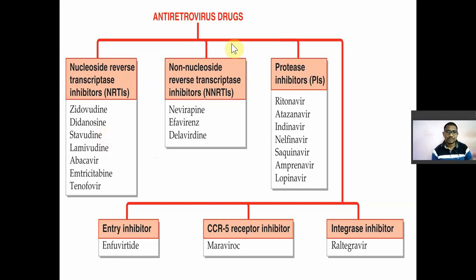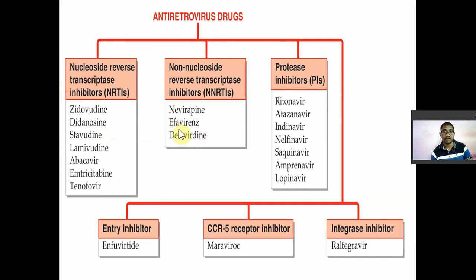The second class of anti-retroviral drugs is non-nucleoside reverse transcriptase inhibitors. There are only three drugs: Nevirapine, Efavirenz, and Delavirdine. You can remember these by the mnemonic 'DEN': Delavirdine (D), Efavirenz (E), Nevirapine (N).